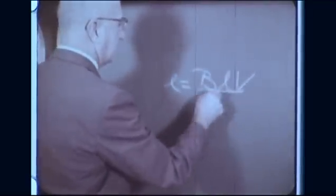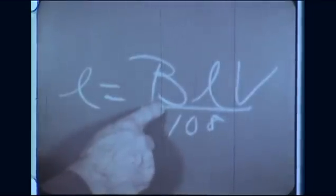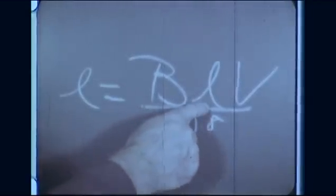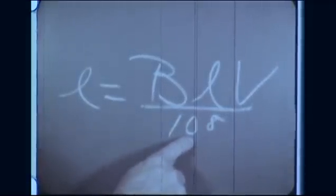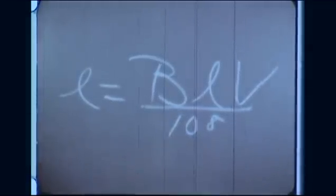To calculate the total induced voltage, use the formula E equals beta LV over ten to the eighth. Beta is the flux density of the magnetic field. L is the total length of the conductor in the magnetic field. V is the velocity of the conductor. And ten to the eighth represents the one hundred million lines of force which must be cut per second to induce one volt.